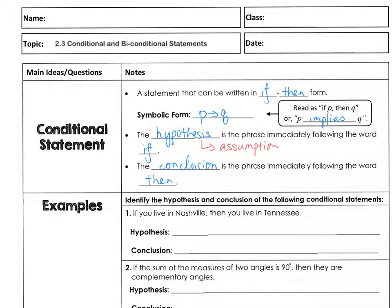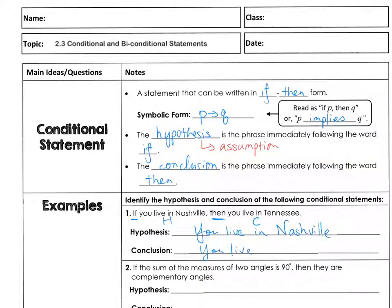Here's an example: 'If you live in Nashville, then you live in Tennessee.' We have an 'if' and a 'then,' so whatever follows 'if' is the hypothesis — you live in Nashville — and whatever follows 'then' is your conclusion — you live in Tennessee.